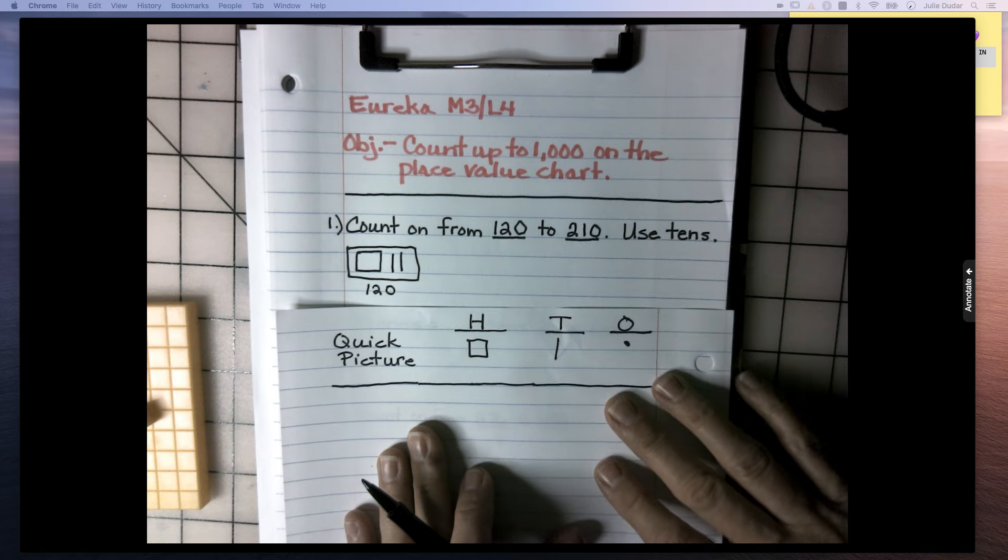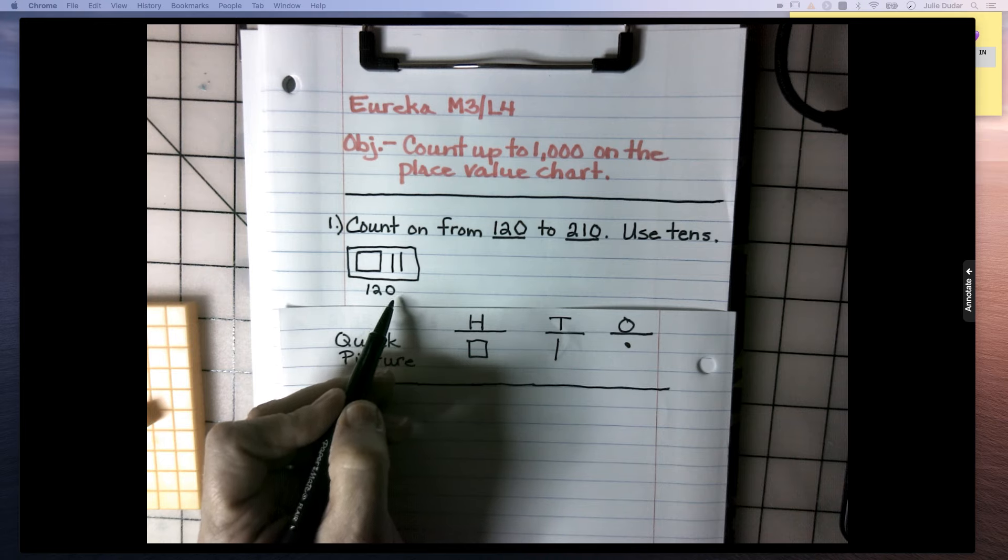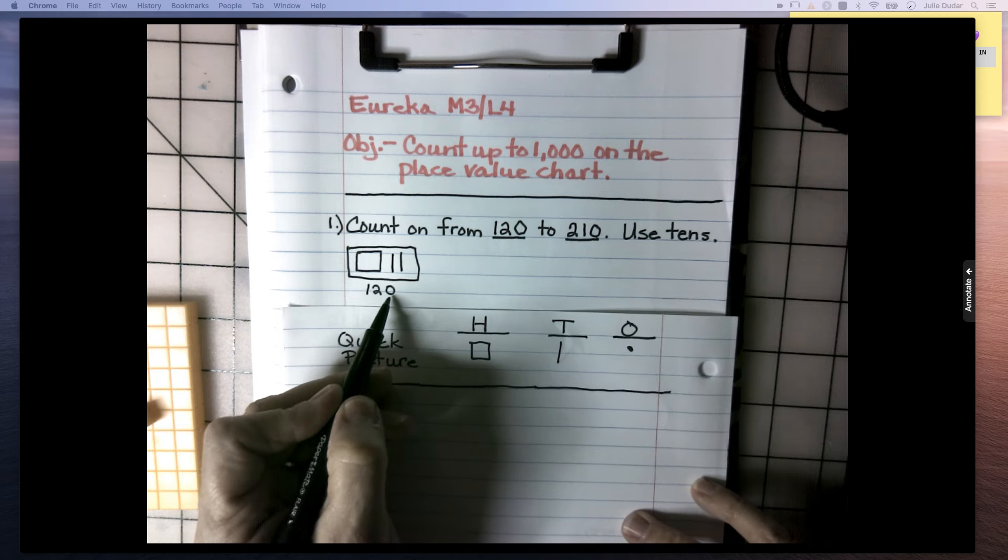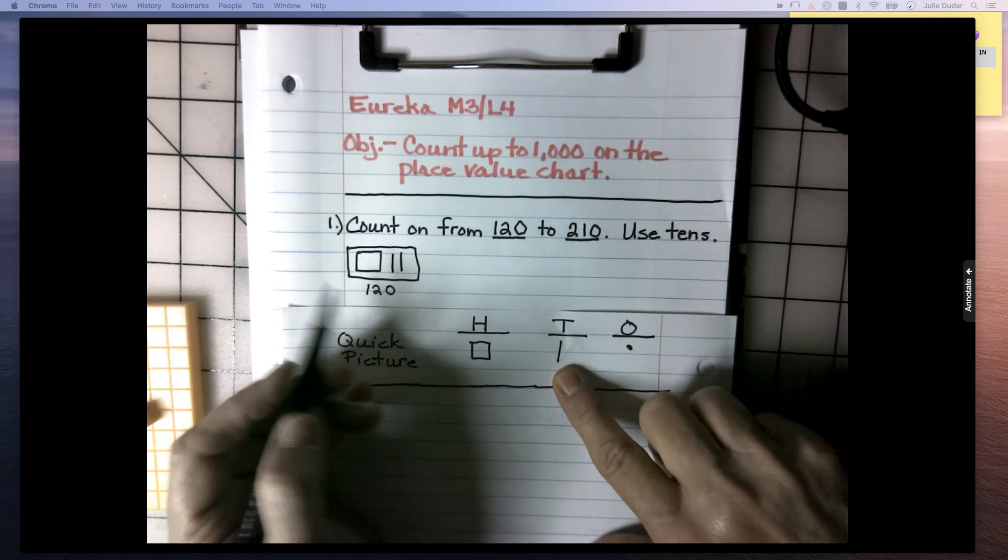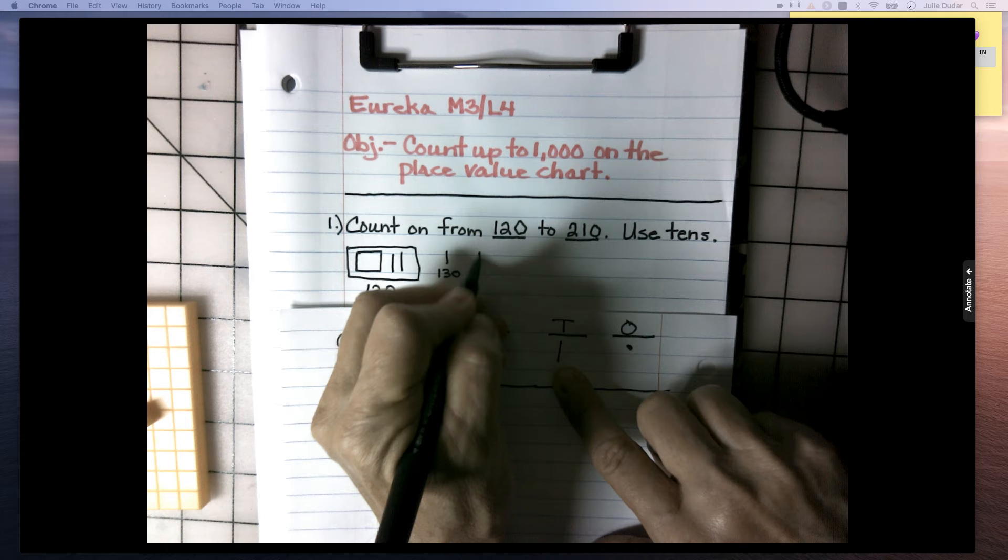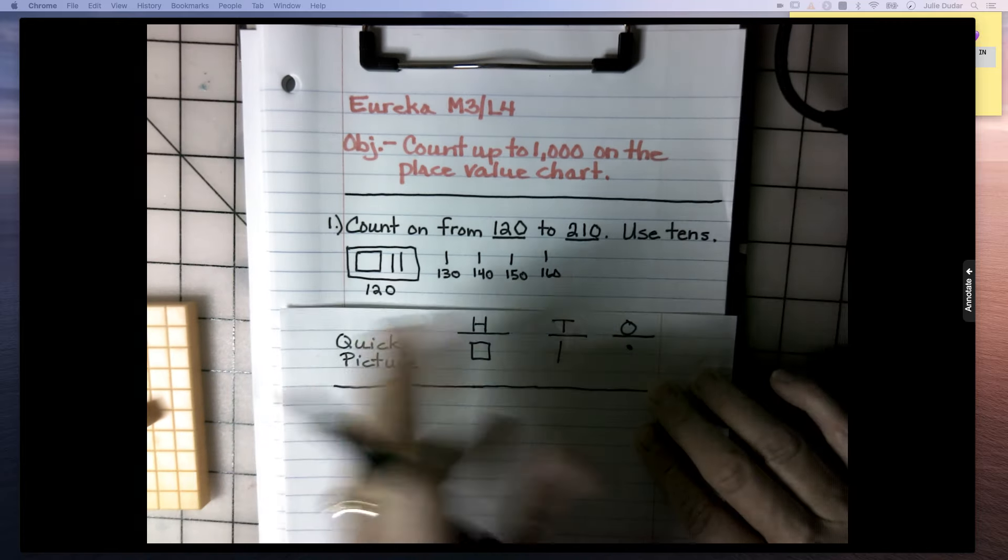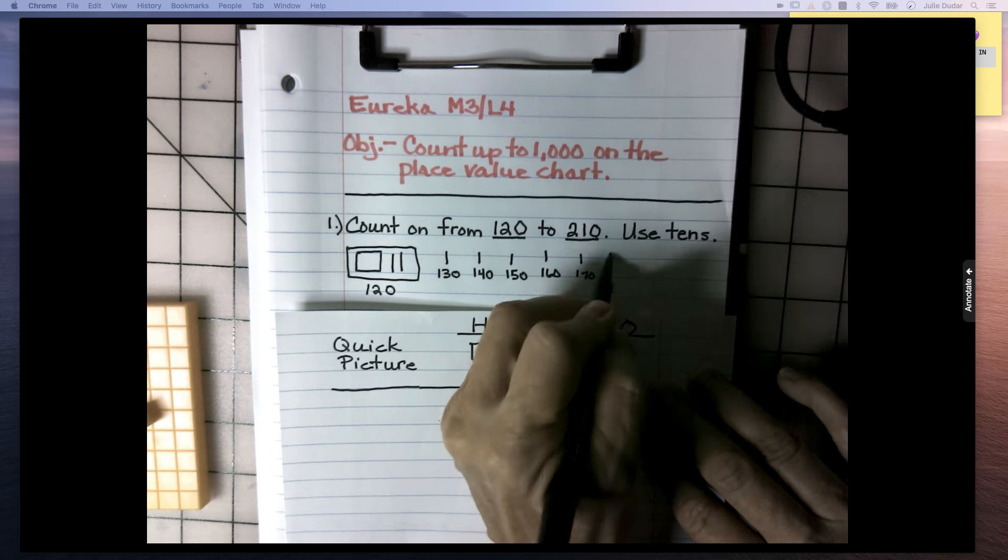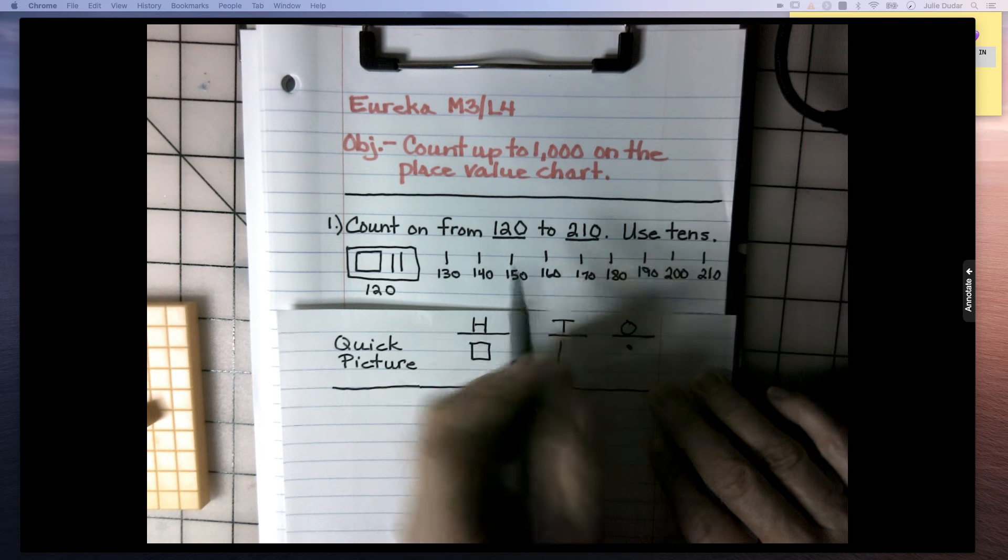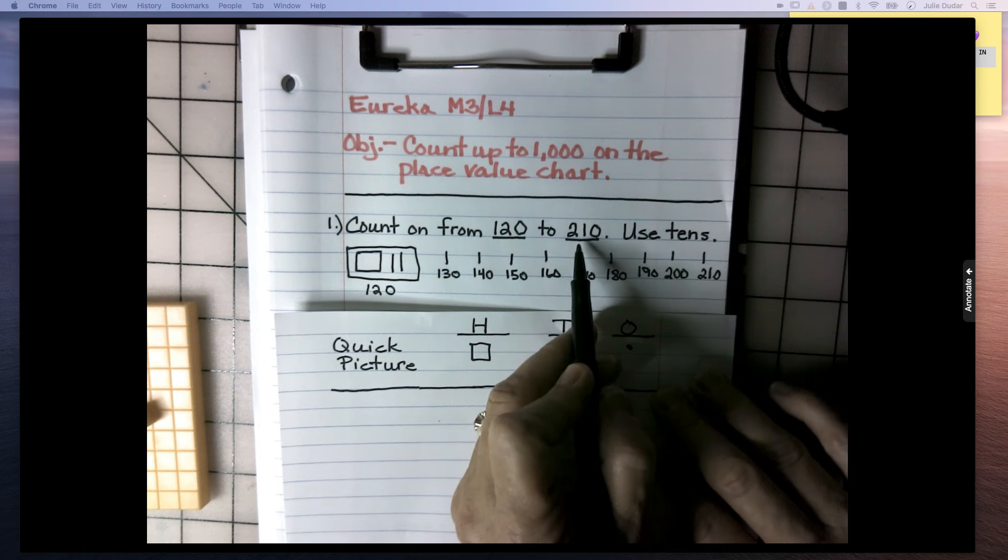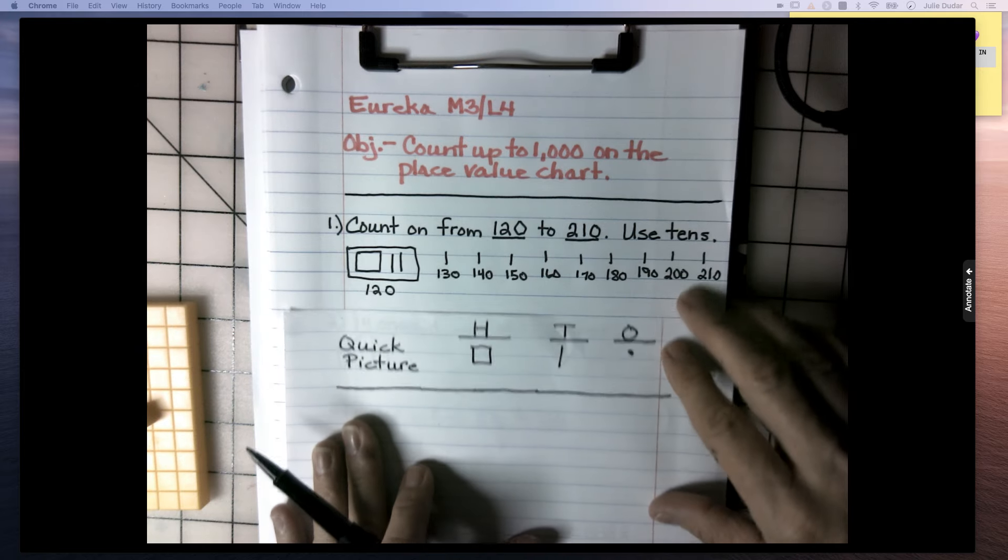Now, to count up to 210, I first need to look at this and say, is this a benchmark number? Yes, it ends in a zero. What would be my next benchmark number? It does need to end in a zero, and I'm thinking it's probably the next 100. So let's count on from 120 to 200 using tens. 130, 140, 150, 160. And as I'm drawing the line, I'm counting, and I'm counting by tens. So I've reached the number that I was asked to reach, and I did that by counting on by tens. So now I have 210.